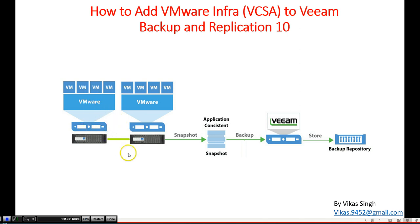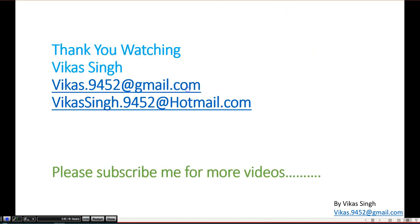In my current environment I have two ESXi hosts, both of which are going to be added under one VCSA. I'm going to add my VCSA to Veeam Backup and Replication. When a backup is scheduled, Veeam will take a snapshot of the ESXi host or VCSA, check application consistency, and once both steps are done it will store the backup in the backup repository.